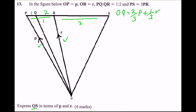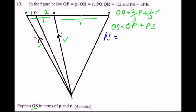Now we find OS. Moving from O to S is the same as moving from O to P and then P to S, so OS equals OP plus PS. We know OP equals p. We are told PS equals 3PR. So we first find PR: PR equals minus p plus r, giving us r minus p. Therefore PS equals 3(r minus p), which is 3r minus 3p.